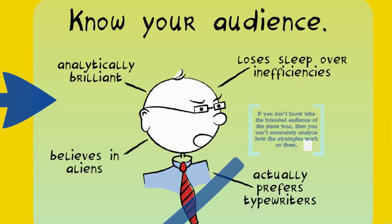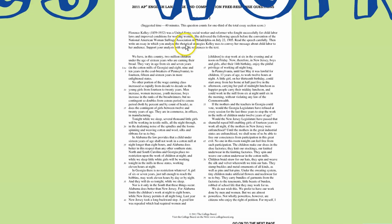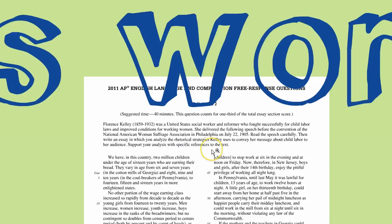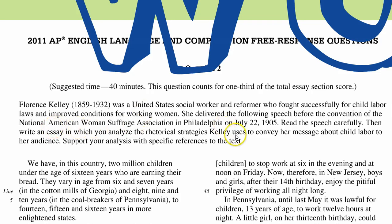You have to actually know your audience. It's really important that if you don't know who the intended audience of the piece was, then you can't really accurately analyze how the strategies work on them. The good news is when you look at that AP prompt right at the top, before the actual passage itself, they'll always give you some background information. They'll tell you who wrote or gave the speech, what the occasion was — for example, 'delivered a speech before the convention of the National American Women's Suffrage Association' — so it also tells you who the audience is. This information is vital for you to be able to speak intelligently about how that strategy was working on the audience.